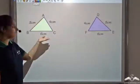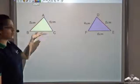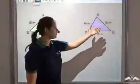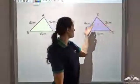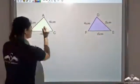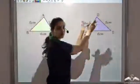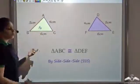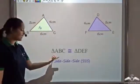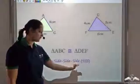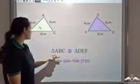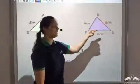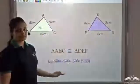Looking at these two triangles, the sides are 5, 4, and 6 for one and 4, 5, and 6 for the other. Three sides of this triangle are equal to three sides of the other triangle. So I can say that triangle ABC is congruent to triangle DEF by SSS — side, side, side.